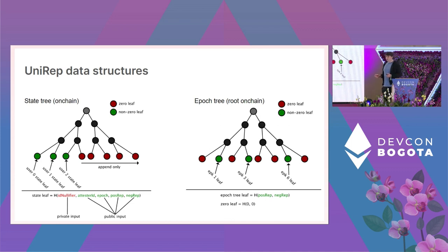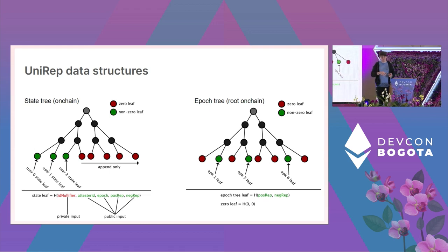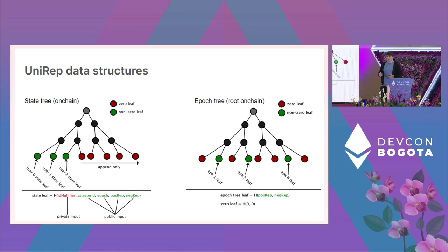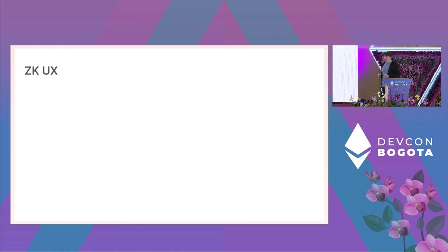The whole idea behind UniRep is that users have identities valid for an epoch. At the end of that epoch, they pack up their reputation and move to a new identity in the next epoch by inserting a leaf into the new state tree. We maintain a copy of these trees every epoch.